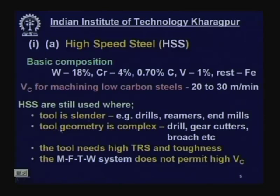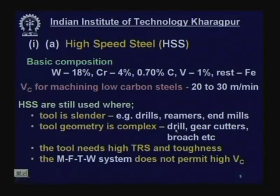High speed steel is also used where tool geometry is very complex — so complex that it is difficult to manufacture with carbides or ceramics, which are very hard to machine. High speed steel can be machined just like any other steel. Complex geometry tools like drills with double flutes, gear cutters, hobs, gear shaping cutters, milling cutters, and broaching tools are still mostly made of high speed steel.